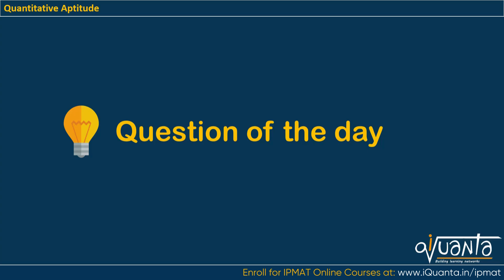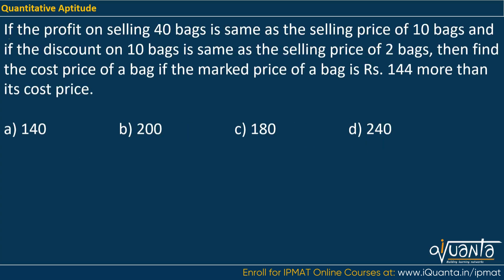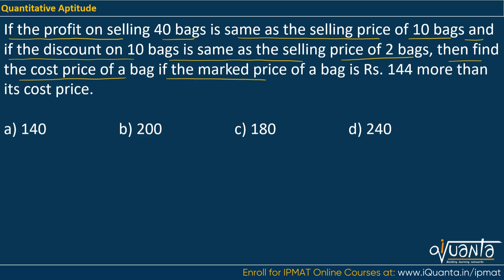Hello everyone. Today's question of the day is based upon profit and loss. We'll deal with cost price, selling price, mark price and discount. The question is: if the profit on selling 40 bags is the same as the selling price of 10 bags, and if the discount on 10 bags is the same as the selling price of 2 bags, then find the cost price of a bag if the mark price of a bag is Rs. 144 more than its cost price.